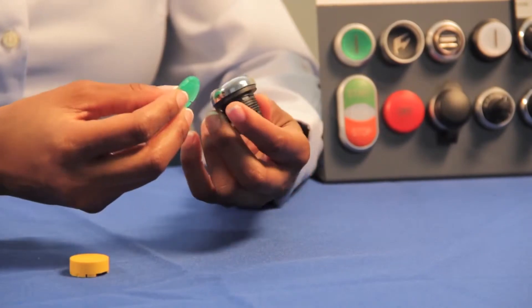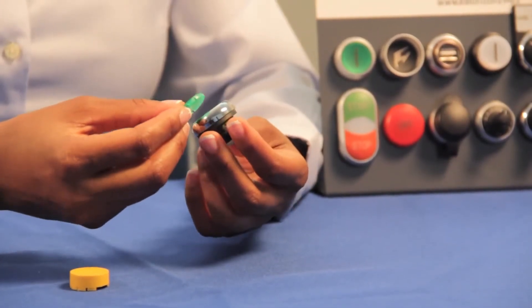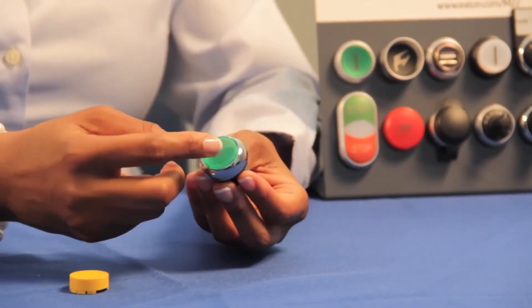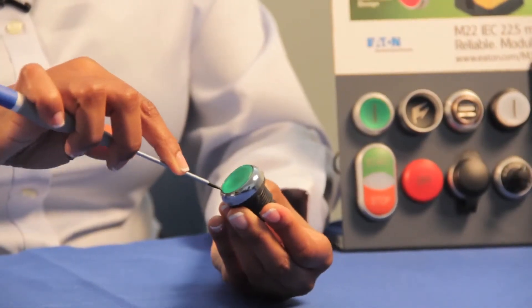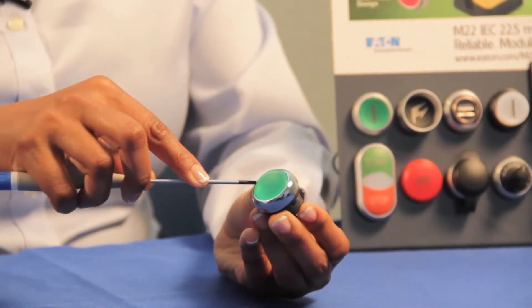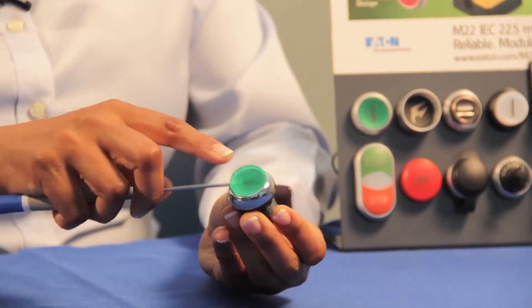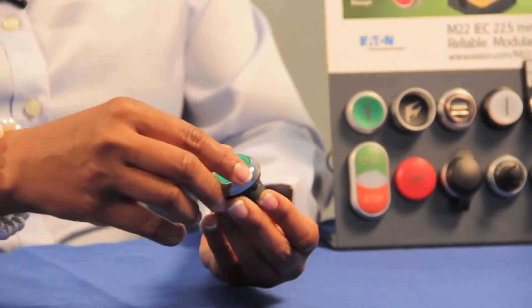To install a button, align the notches to the tabs inside the operator and secure it with an easy snap. Removing the button is also easy. Just look for the highlight mark on the button and detach it from the operator by sliding using a slim screwdriver.